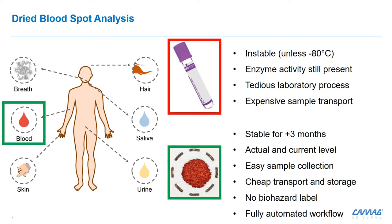So let's go into the analysis process. We need to use the matrix blood as PEth is located within the red blood cells. However, in a liquid blood sample — here shown as an EDTA tube — we need to store it at minus 80 degrees Celsius to stop the enzyme activity and avoid post-sampling degradation of PEth. This also requires quite tedious lab processes, especially keeping the sample at minus 80 degrees Celsius throughout the process, which makes it very expensive.